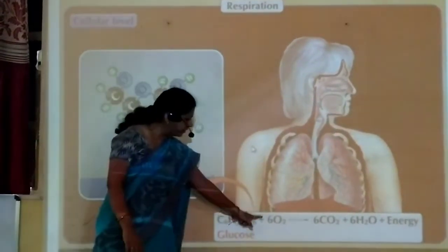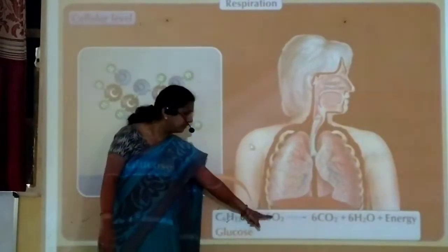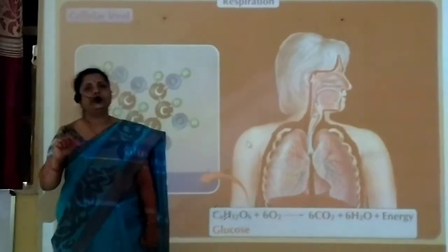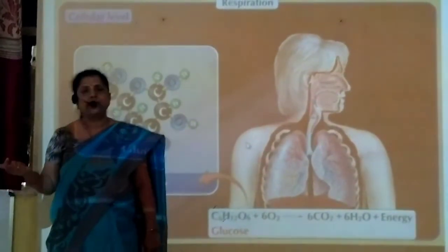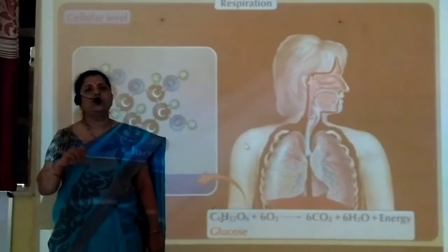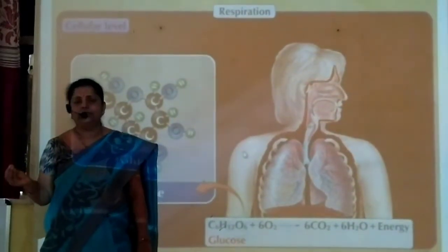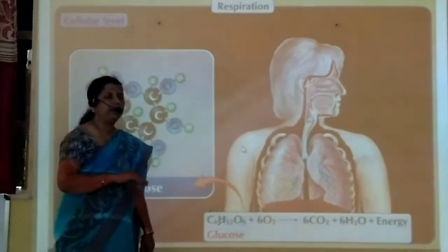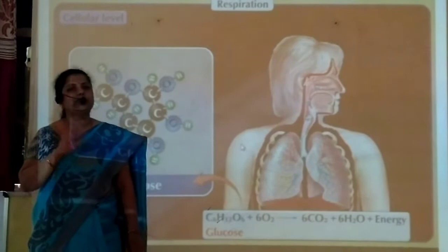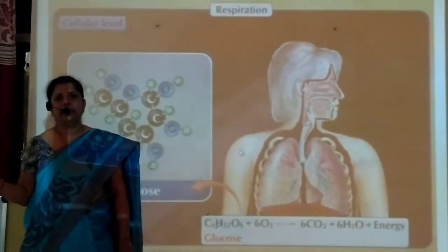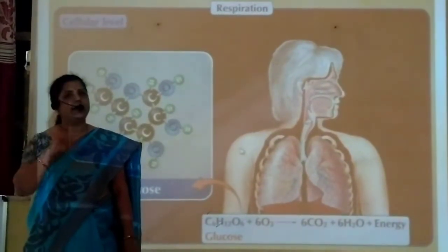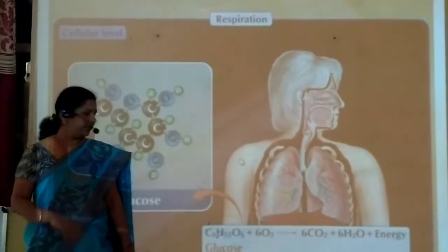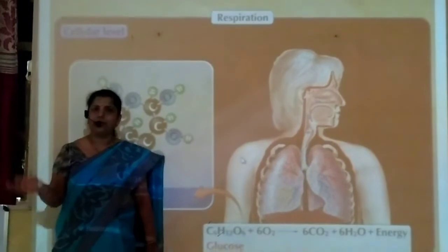In aerobic respiration, glucose combines with oxygen and energy is released — respiration in which energy is released in the presence of oxygen. In some lower animals and bacteria, oxygen is not necessary to release energy from glucose. Energy is released in the absence of oxygen, and that type is called anaerobic respiration.